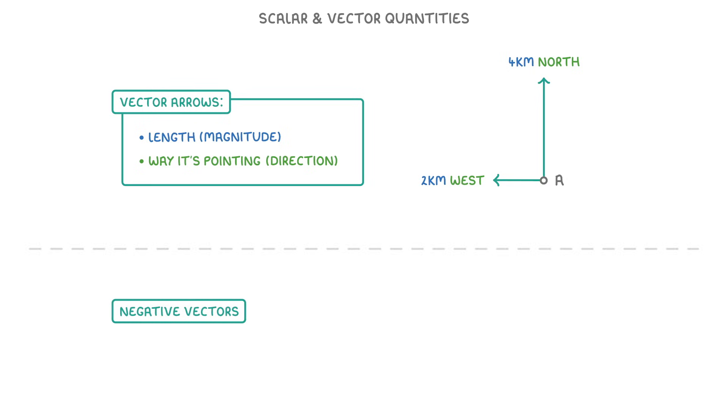We can also have negative vectors. For example, if we just had these two arrows, we could label our 2km west one as minus 2km east instead, because it's effectively backwards in the east direction.